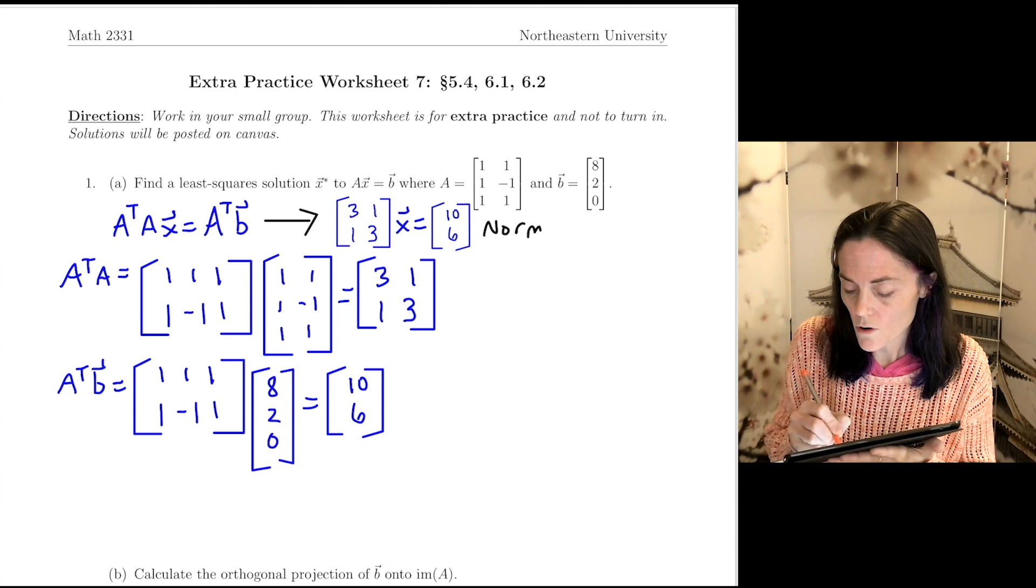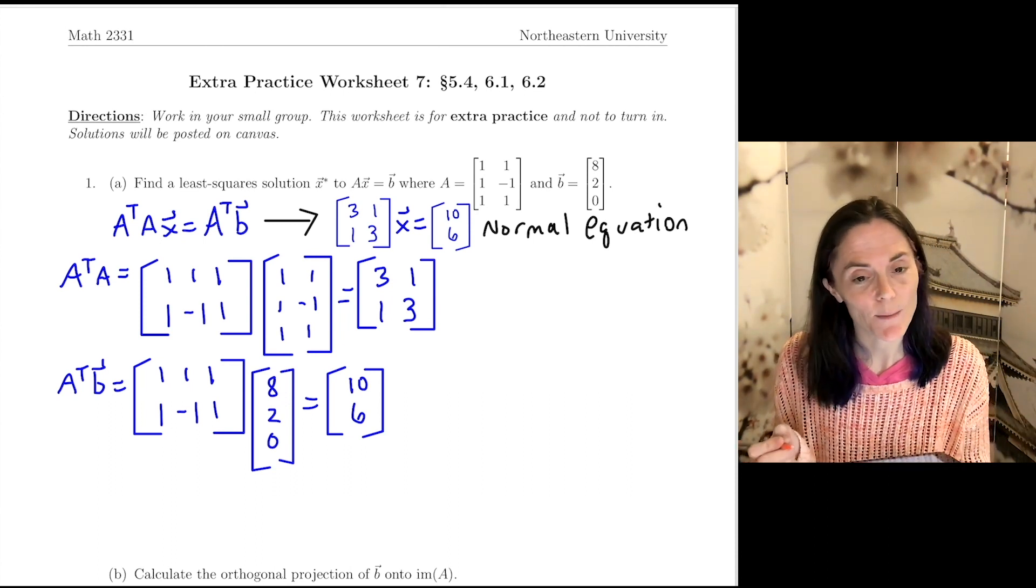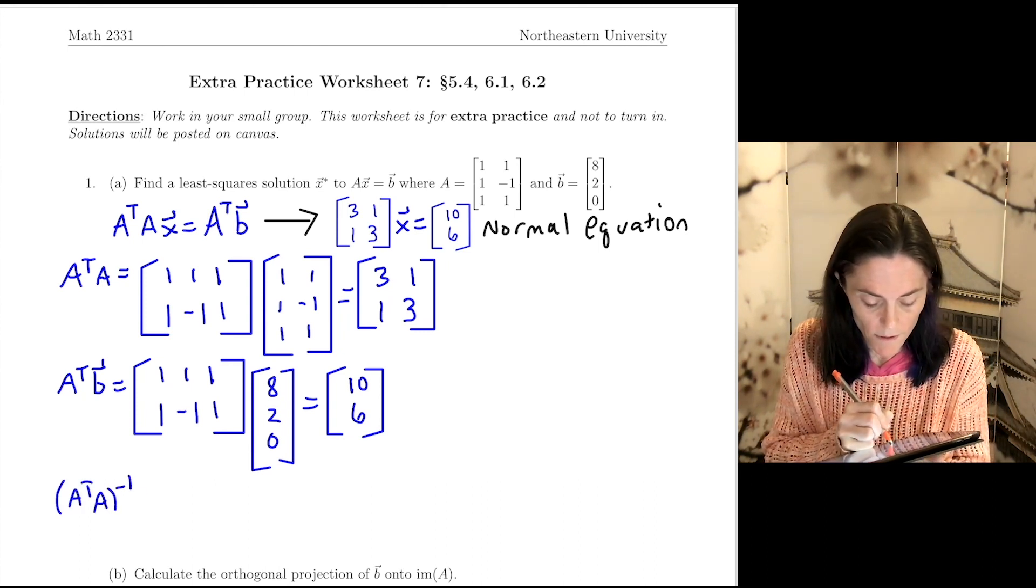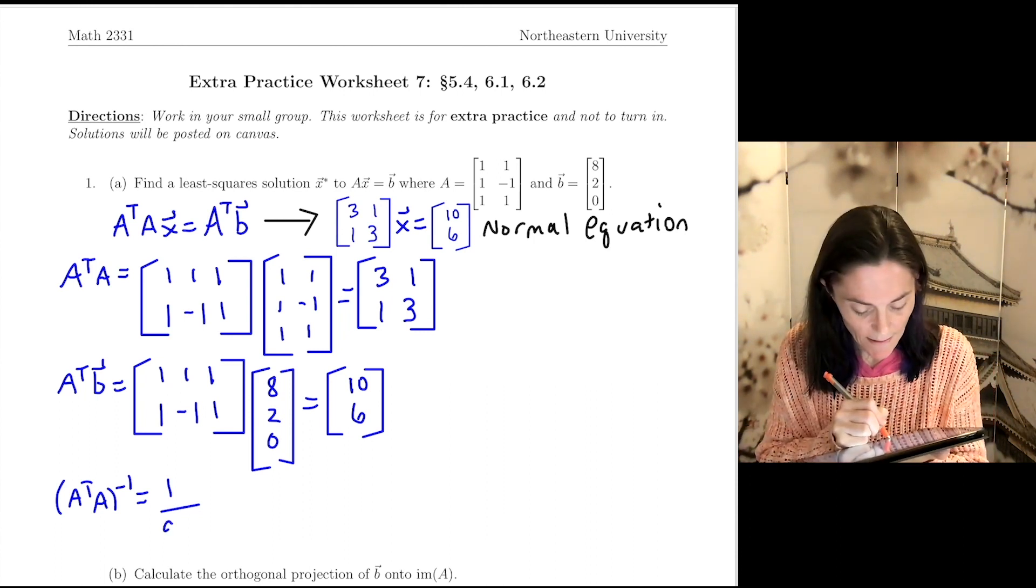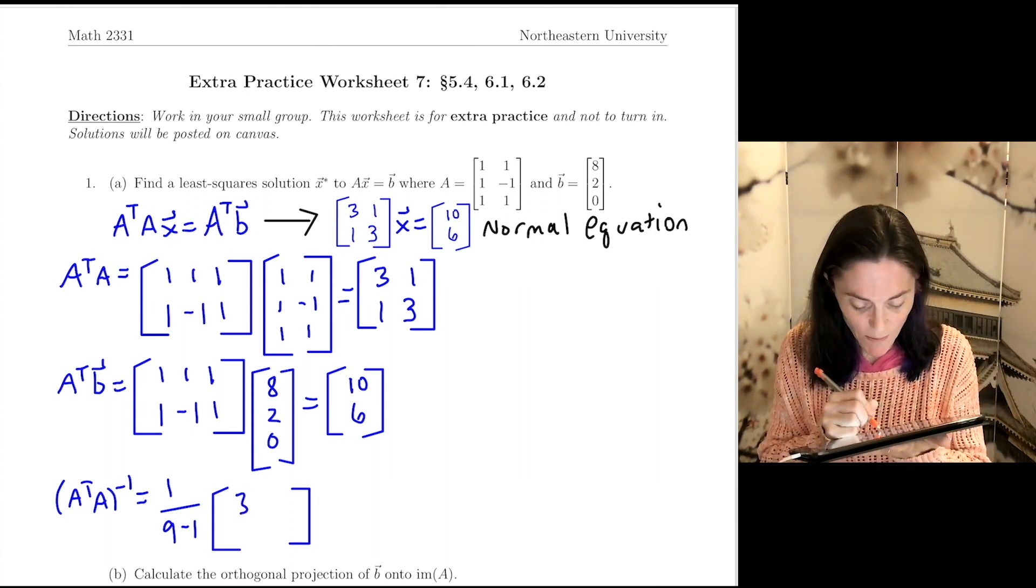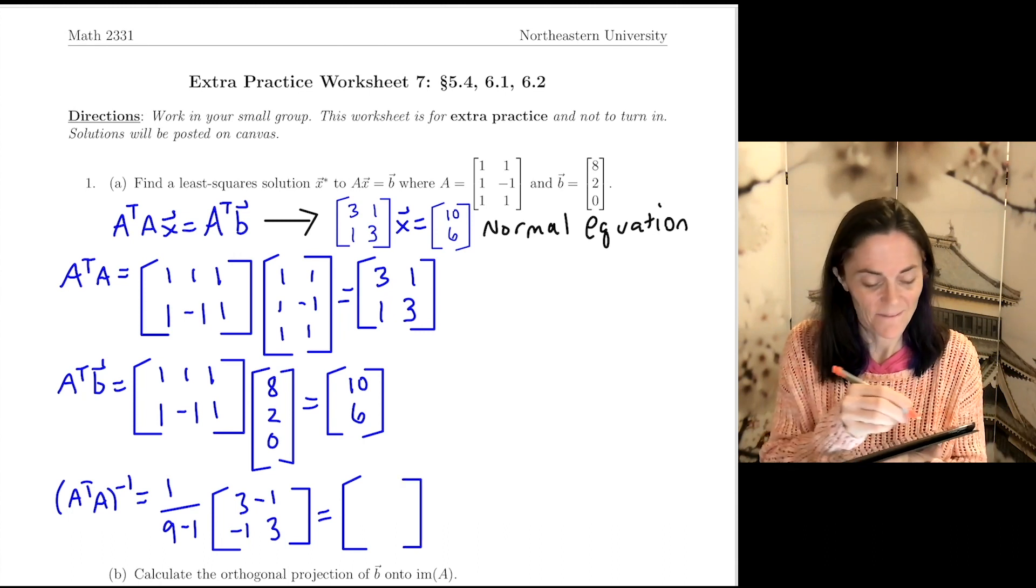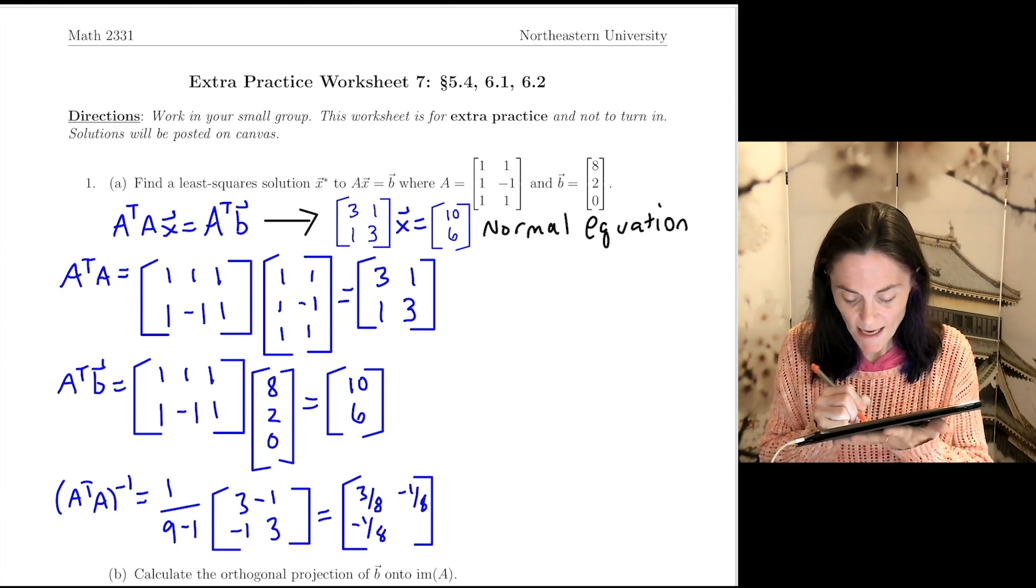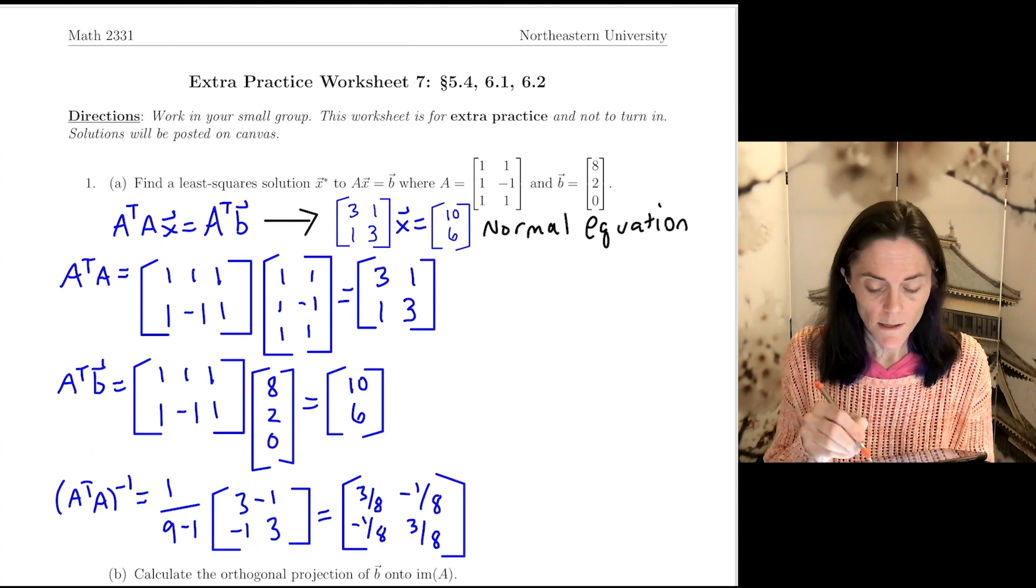So let's solve. Well, the thing is, for this example, you see A transpose A is invertible, so we can calculate its inverse. A transpose A inverse. This will be 1 over the determinant here is 9 minus 1. And then when we find the inverse of a 2 by 2 matrix, we flip the diagonals. This would be 3 and 3, and then take negative of the off diagonals. So all together here, I get 3 over 8, and then minus 1 over 8, minus 1 over 8, and 3 over 8. I could have also left the 1 over 8 outside, but it's perfectly fine.